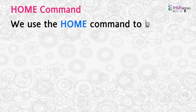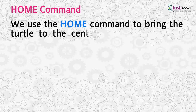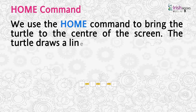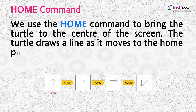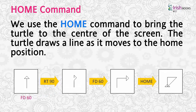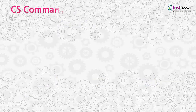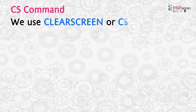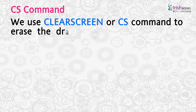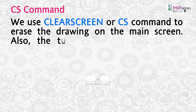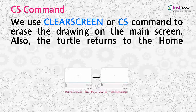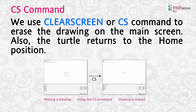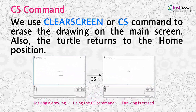We use the home command to bring the turtle to the center of the screen. The turtle draws a line as it moves to the home position. We use the clear screen or CS command to erase the drawing on the main screen. When CS is used, the turtle also returns to the home position.